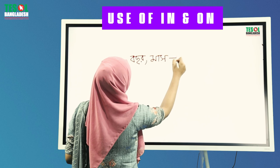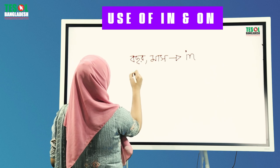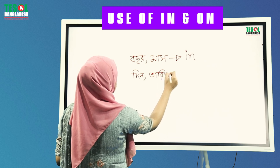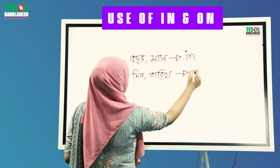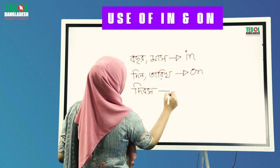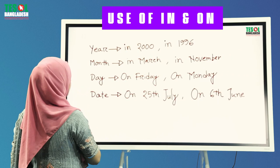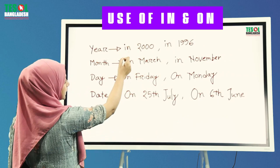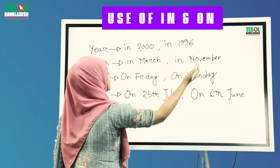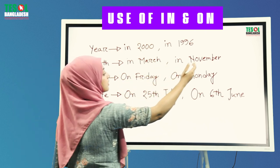We will use the preposition 'in' for years and months. Bochor ebong maasher khetre amra preposition 'in' ke vayabhar kurubo. For example: in 2000, in 1996. For months: in March, in November.